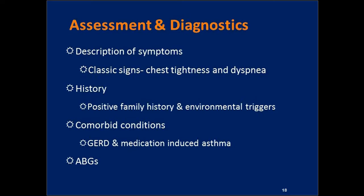Assess environmental triggers — ask what they've been doing lately, whether they were cutting the grass or weeding flower beds, going to the park. Have them report their history. Ask about comorbid conditions like GERD. There can also be medication-induced asthma, specifically from beta blockers, which are not cardioselective and will block beta receptors in the lungs as well, causing bronchoconstriction. Look at their medication list. In severe cases and acute attacks, an ABG is warranted to look at oxygen levels and acid-base balance.